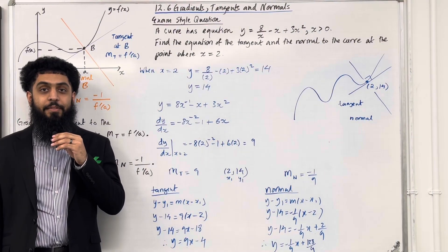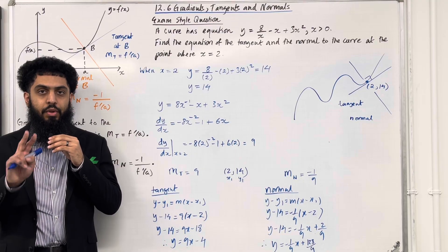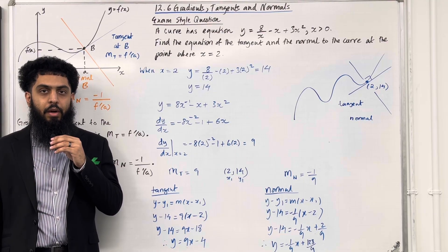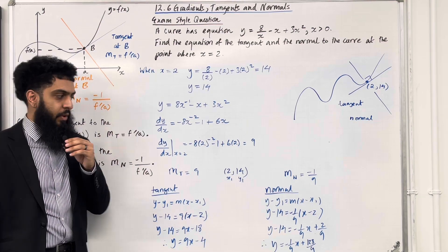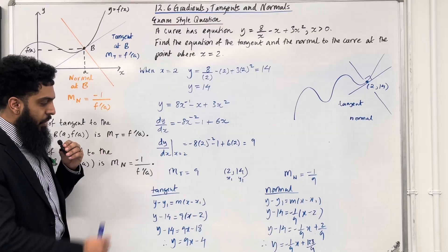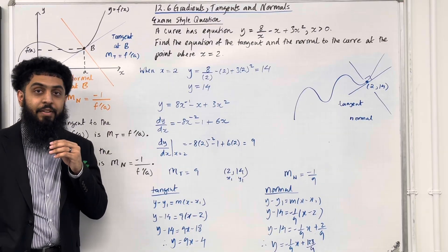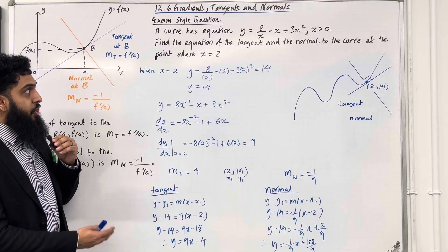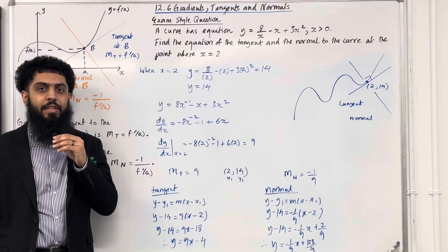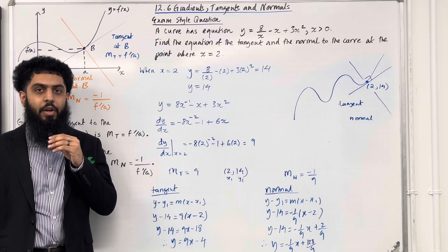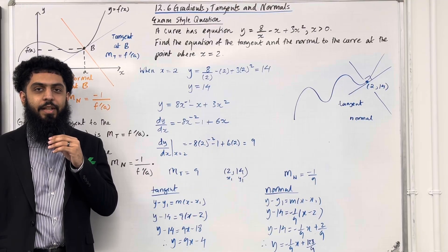Notice that in the exam style question, there wasn't a specific form required for the equation of the tangent or the normal. The two forms of the equation of a straight line are y equals mx plus c, and ax plus by plus c equals 0. So there was a freedom of choice — I've gone for y equals mx plus c for both. That completes the exam style question and this teaching video on 12.6 gradients, tangents and normals. If you found this useful, please subscribe, leave a like, leave a comment, and turn on your notification bell so you receive notifications every time I post a new teaching video. Thank you.